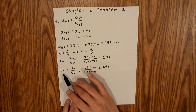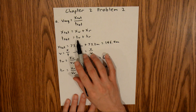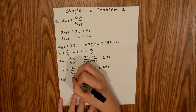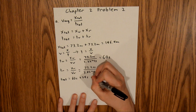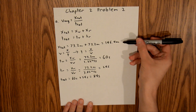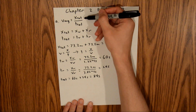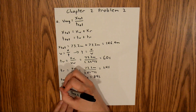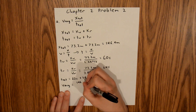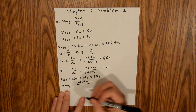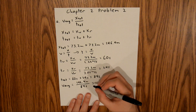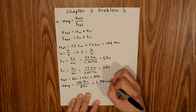Now we have time walked and time ran. Using the total time equation, we can plug them both in to find our T-total. So T-total is equal to 60 seconds plus 24 seconds, which is equal to 84 seconds. So now we have X-total and T-total, and we can use the V-average equation. V-average is equal to 146.4 meters divided by our total time of 84 seconds, and you will find that our average velocity for Part A is equal to 1.74 meters per second.